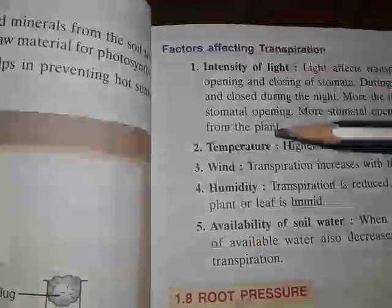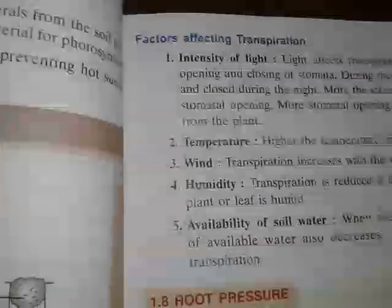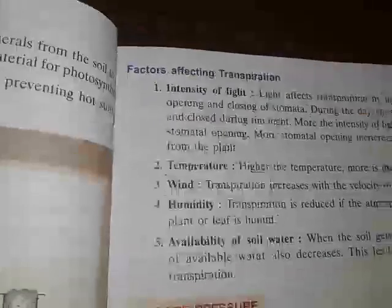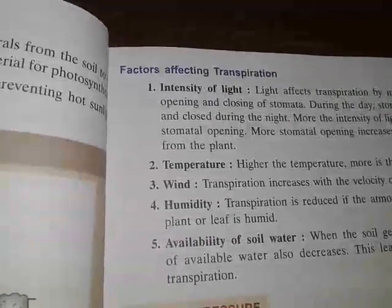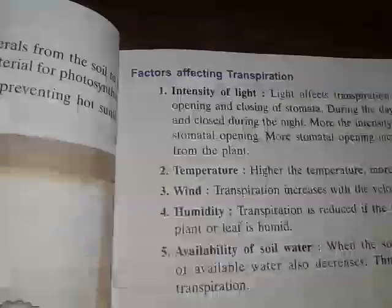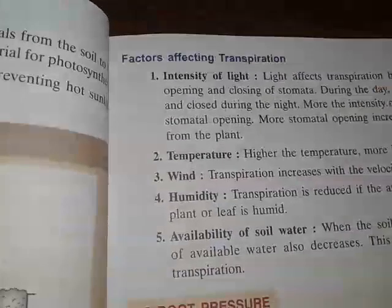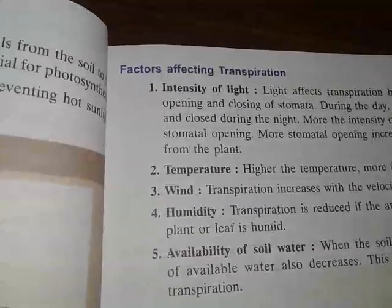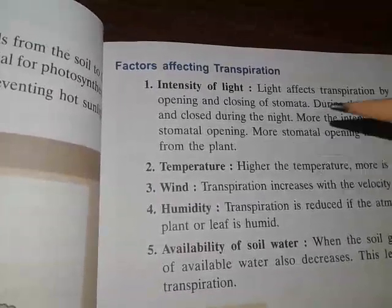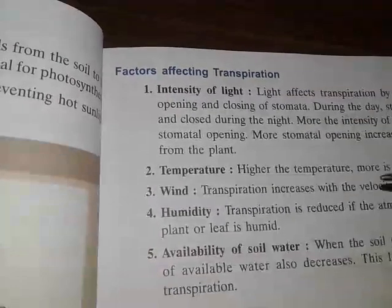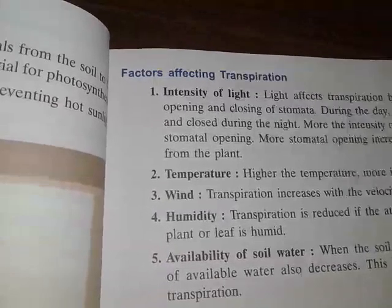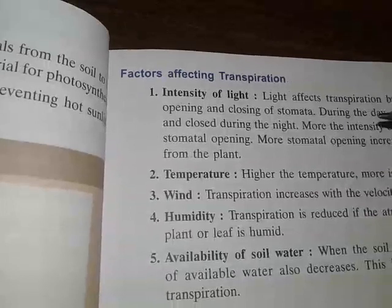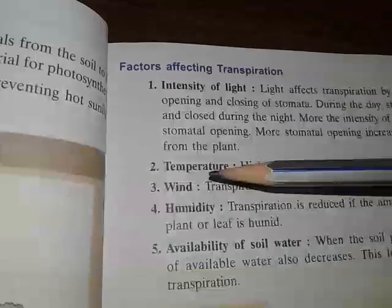The factors affecting transpiration are: intensity of light, temperature, wind, humidity, and availability of soil water. First, intensity of light: light affects transpiration by influencing the opening and closing of stomata. During the day, stomata are open; during the night they close. The more the intensity of light, the more the stomata open, which increases water loss from the plant.